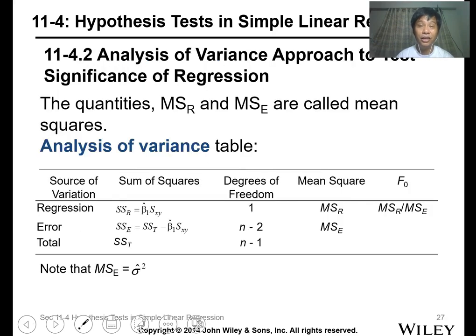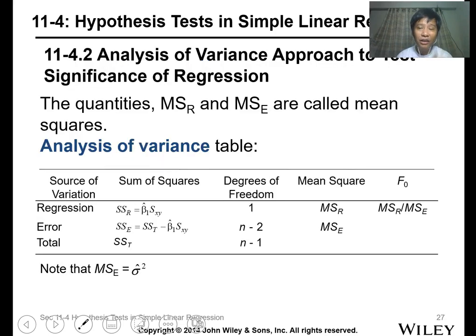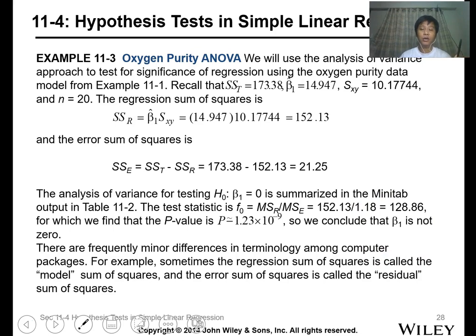For the ANOVA example using oxygen purity, we have this table that will be given to you. Recall the data we obtained: computing SSR, SSE, MSR (SSR divided by 1), MSE (21 divided by 18, which is 1.8), the f value is 128.86. Compare this value with the data from your f table, or calculate the p-value, which is very small. Therefore, we can conclude that there's a regression or relationship between your data.